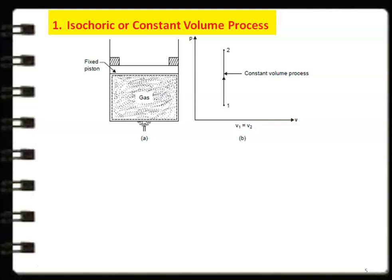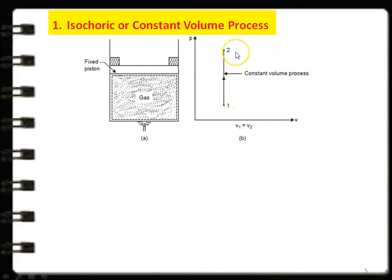The first process is the isochoric or constant volume process, where the volume of the thermodynamic system is kept constant — there is no change in volume. We have a vessel filled with gas. The initial pressure is P1, and the volume remains constant. We add heat energy and record the temperature and pressure. Since the piston is fixed and volume cannot change, the pressure of the gas continuously increases as heat is added.